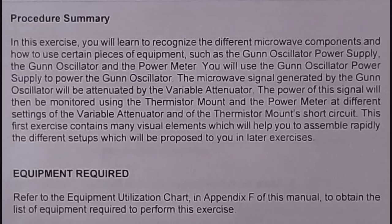In this exercise, you will learn to recognize the different microwave components and how to use equipment such as the gun oscillator, power supply, and power meter. You will use the gun oscillator power supply to power the gun oscillator. The microwave signal generated by the gun oscillator will be attenuated by the variable attenuator. The power of this signal will be monitored using the thermistor mount and the power meter at different settings of the variable attenuator and the thermistor mount short circuit.